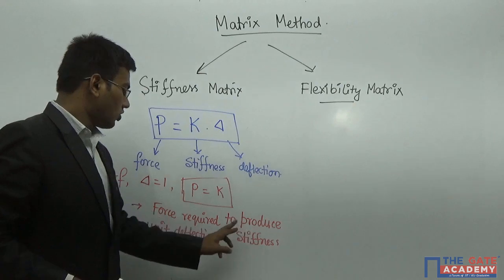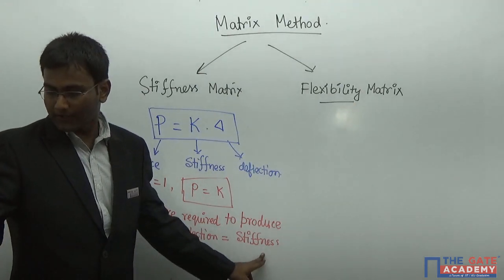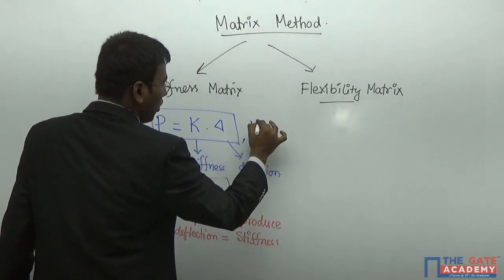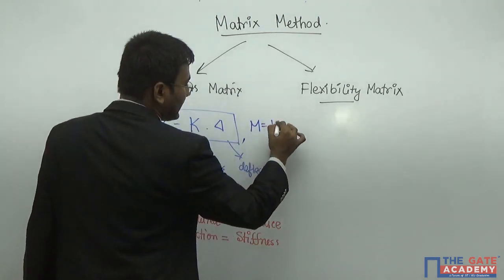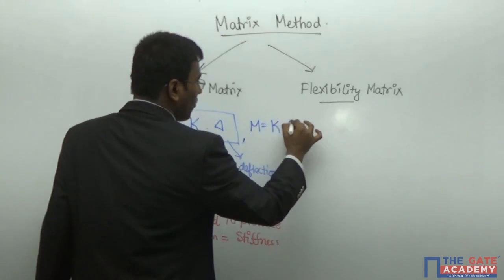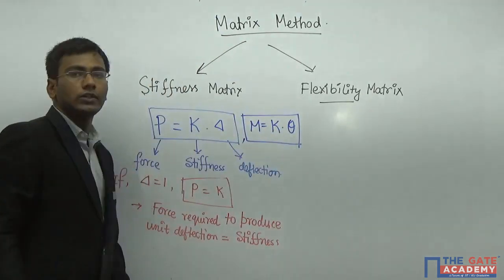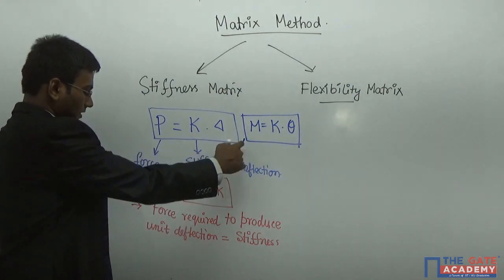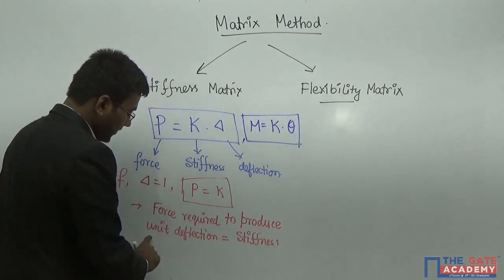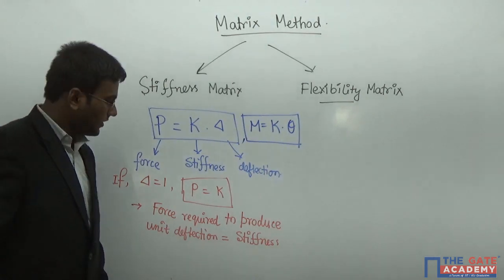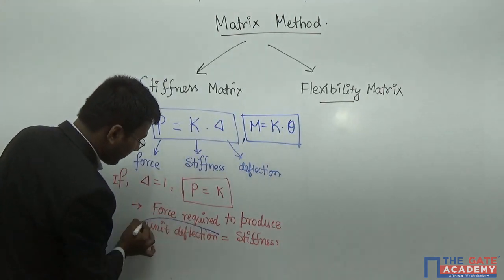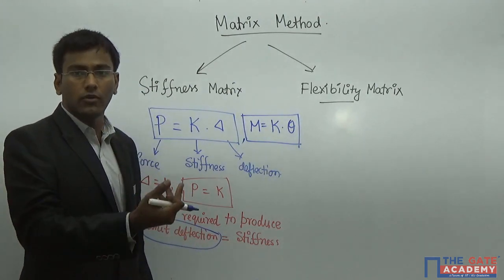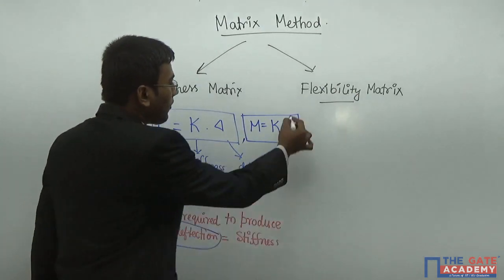That definition was for force. Similarly, if we apply a moment, stiffness still applies — moment produces a rotation θ. So moment required to produce unit rotation equals stiffness. In summary, for stiffness, we are producing a unit displacement (deflection or rotation). Now, what is flexibility?